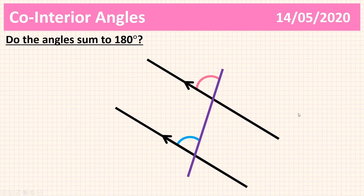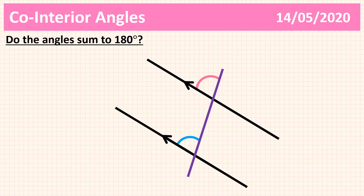And here's your last one. Do they sum to 180? The answer is no, they don't sum to 180. Even though they're on parallel lines and they are on the same side of the transversal, they are not both interior to the parallel lines. The blue one is inside the parallel lines, but the pink one is not interior to the parallel lines. So hopefully that gives you a really good understanding of what co-interior angles are. Remember: they need to be on parallel lines, on the same side of the transversal, and both interior to the parallel lines. If it fits those three criteria, they are co-interior and they sum to 180.